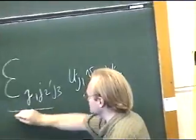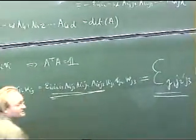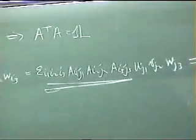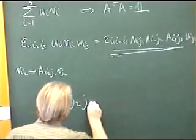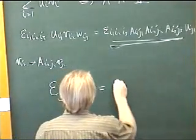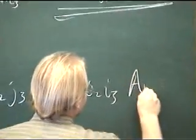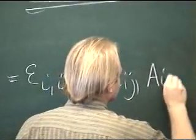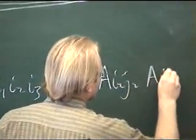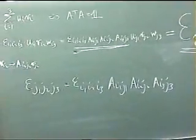If that's going to be true, what I want is this coefficient to be equal to that there. So the condition I'm asking for is epsilon j1, j2, j3 has to be equal to epsilon i1, i2, i3, ai1 j1, ai2 j2, ai3 j3. So that's what I would like to happen.